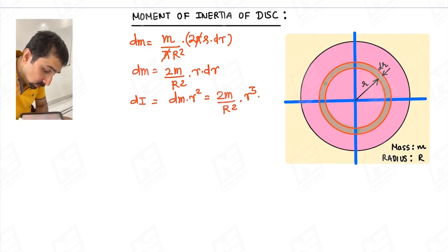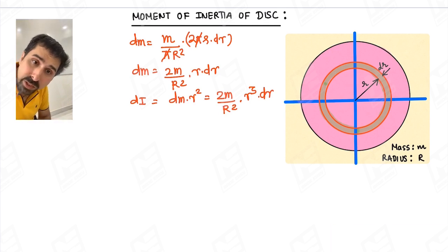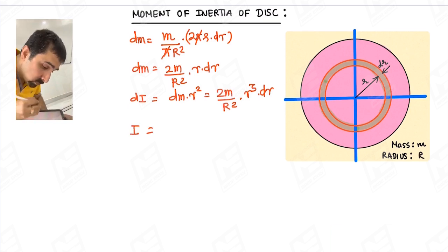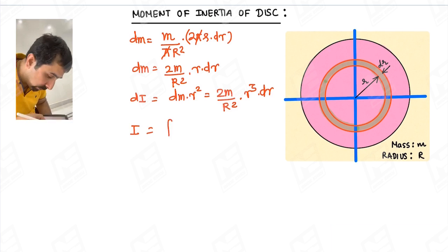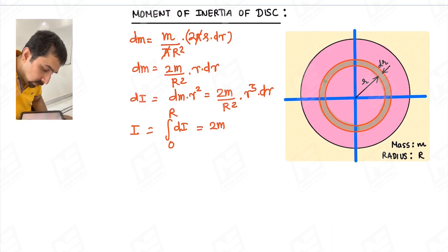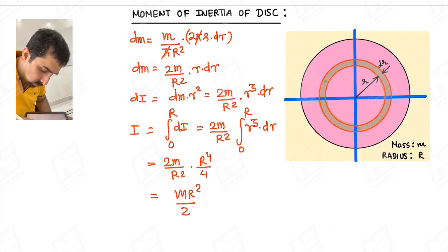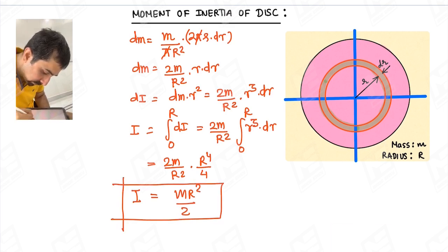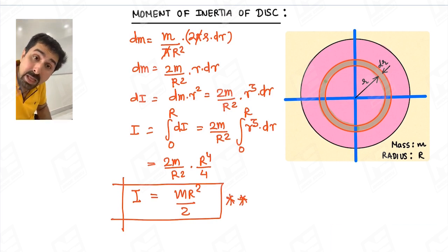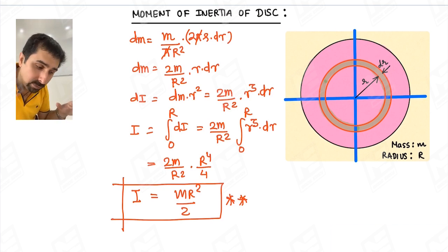Integrating from r equals 0 to capital R covers the complete disk. The moment of inertia of a disk about an axis through its center and perpendicular to the plane is I equals the integral of dI from 0 to R, which is 2m upon R squared times r cubed dr from 0 to R. This gives 2m upon R squared times R to the power 4 upon 4, which comes out to be mR squared upon 2. So the three objects — rod, ring, and disk — and their standard moments of inertia have been covered. We will discuss other objects later.